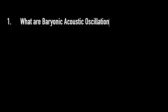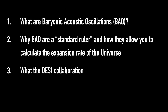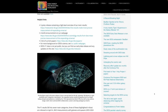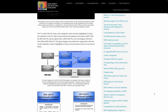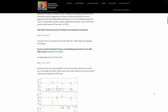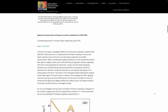In this video, we're going to chat first about what Baryonic Acoustic Oscillations are; second, why they are a standard ruler and how they can be used to calculate the expansion rate of the universe; third, what the DESI collaboration have found; and fourth, whether or not this agrees with our current best model of the universe. This change in expansion rate was just one of many things DESI looked at with their first year of data, so I'll link the DESI website below if you want to read about all the other results.